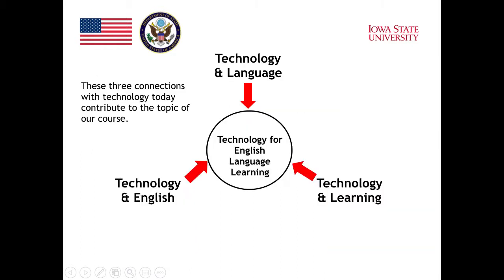These three connections to technology contribute to the topic of our course. In other words, our topic is affected by these three larger trends in society: the connection between technology and language, the connection between technology and learning, and the connection between technology and the English language. All of those connections operate outside of our classrooms, but they all impact how we use technology for English language learning. All these larger societal trends provide new opportunities for us to use technology for English language teaching and learning.